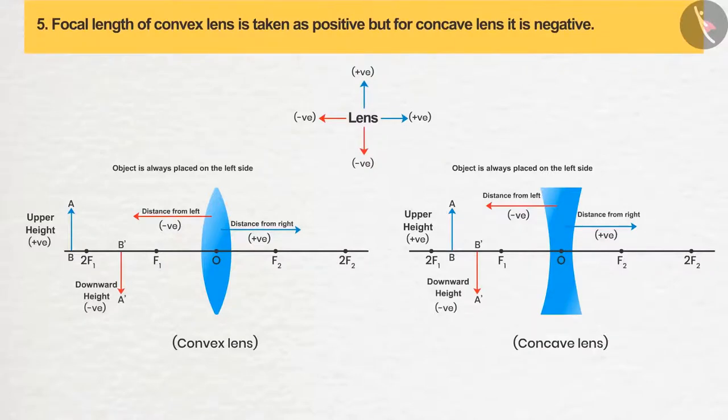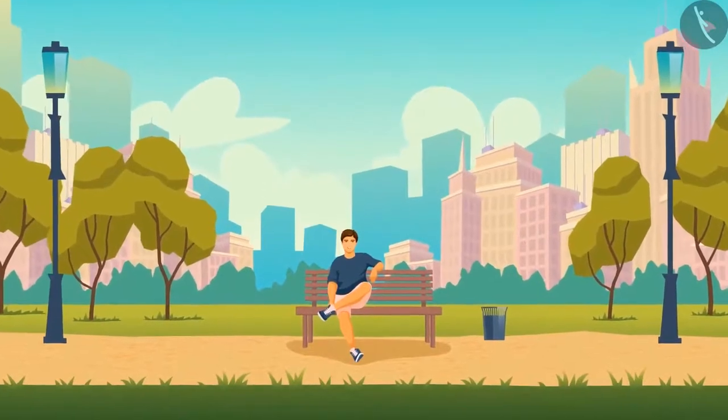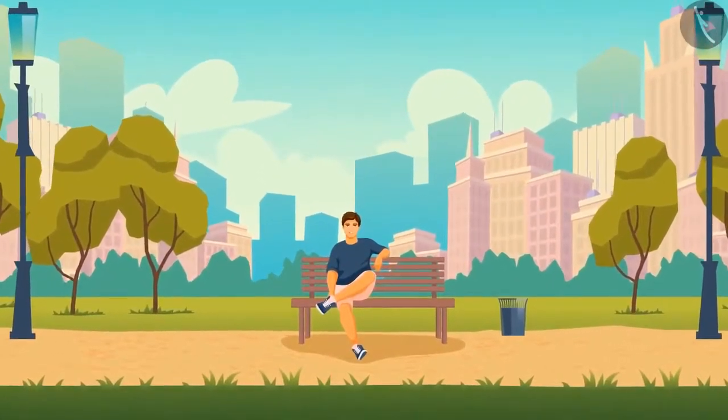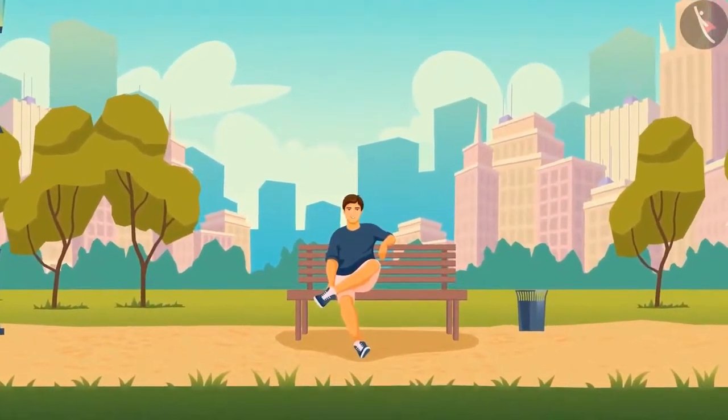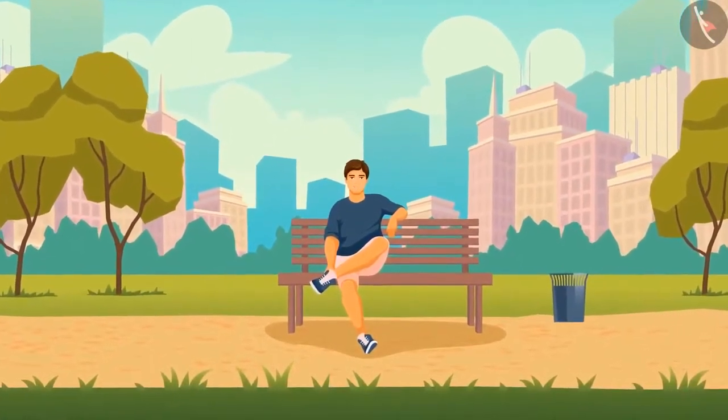In the case of a mirror, it was clear that in a convex mirror the focus is on the right side so it is taken positive, and in the concave mirror on the left side so it is negative. But the lens has two focuses, so how will we give the symbol?